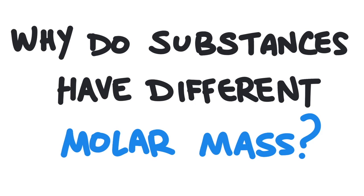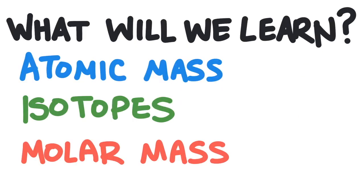So what are we going to learn in this video? First, we will learn what atomic mass is and where to find it on the periodic table. Then we'll see how isotopes of different elements have different masses. Finally, we'll see how atomic mass compares to molar mass.